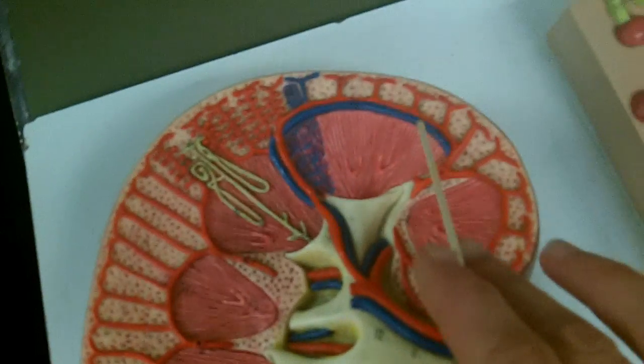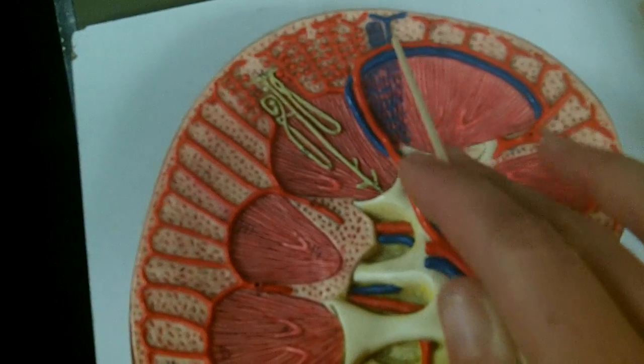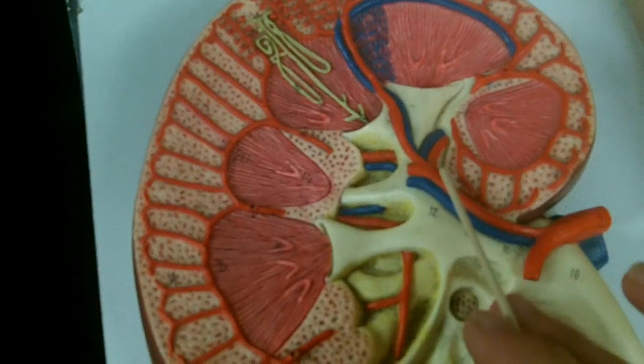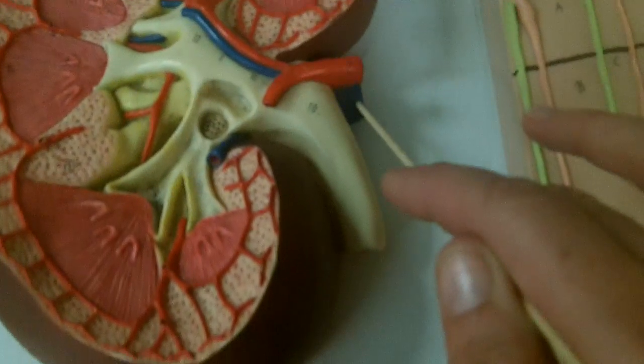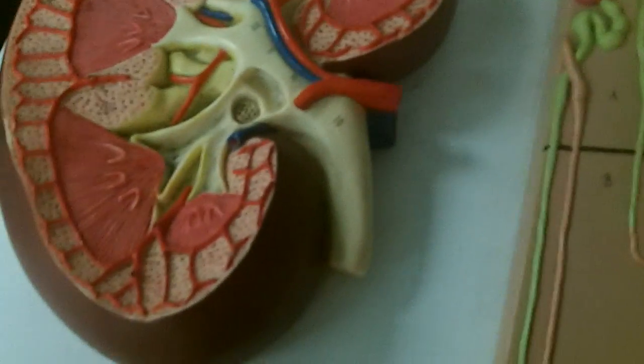We also see some veins here. We've got the cortical radiant veins, we have the arcuate vein, interlobar veins, and then we ultimately end up with the renal vein. There is no lobar vein and there is no segmental vein.